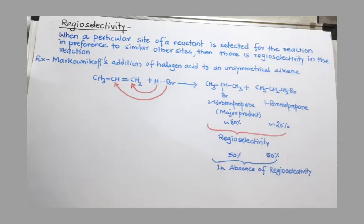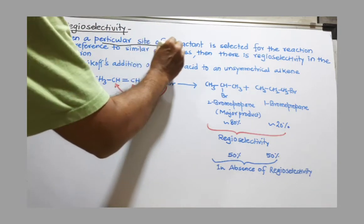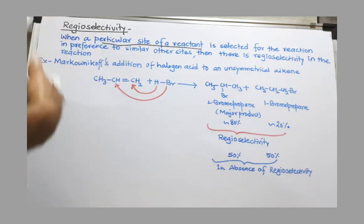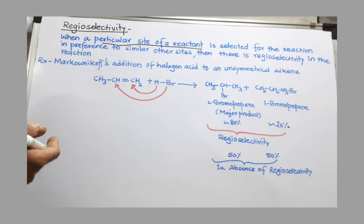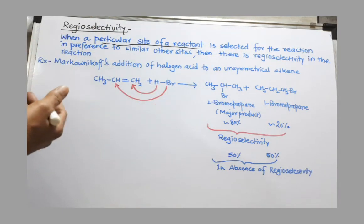Regioselectivity: When a particular site of a reactant is selected over another similar site by the reagent for the reaction or conversion, it is called regioselectivity. So one site is selected over another by the reagent - that is regioselectivity.